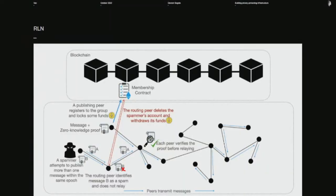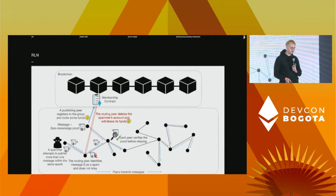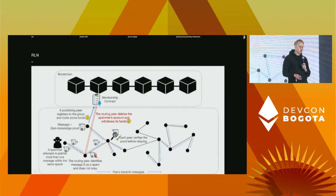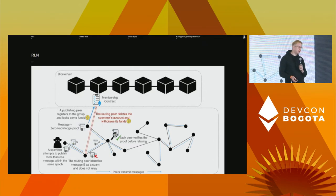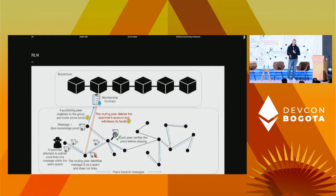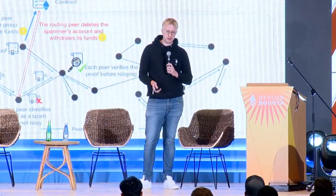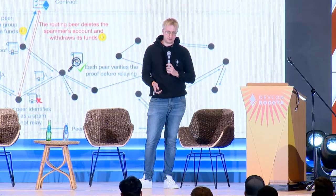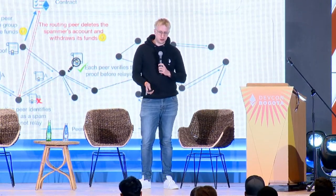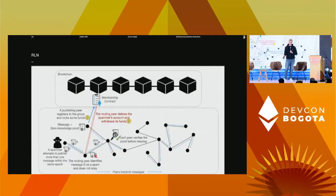Here's how RLN is used with the relay GossipSub protocol. A node registers and locks up funds, after which it can send messages — publishing a message containing the zero-knowledge proof and some other details. Each relay node listens to the membership contract for new members and keeps track of relevant metadata and the Merkle tree. This metadata is needed to detect double signaling and perform slashing. Before forwarding a message, it does verification checks to ensure no duplicate messages, that the signal proof is valid, and that no double signaling has occurred. This can also be combined with traditional peer scoring. In line with Waku's modularity goal, RLN is applied on a specific subset of pub/sub content topics — think of it as a kind of extra-secure channel.